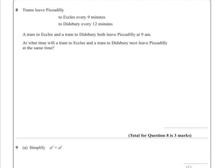Question 8. Trams leave Piccadilly to Eccles every 9 minutes, to Didsbury every 12 minutes. A tram to Eccles and a tram to Didsbury both leave Piccadilly at 9am. What time will a tram to Eccles and a tram to Didsbury next leave Piccadilly at the same time?